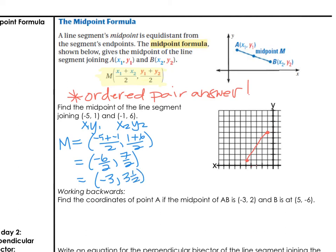Over on our graph, if we count negative 3 and up 3 and a half, notice you're right here. And that would be the midpoint of that line segment. And that's all you do for this formula.